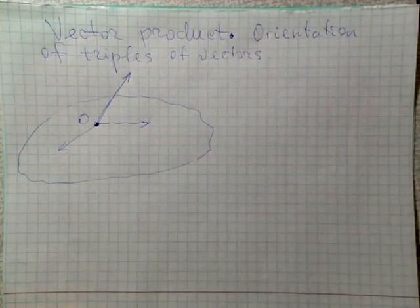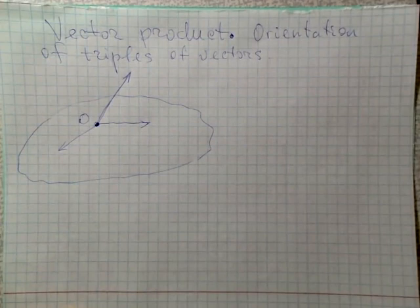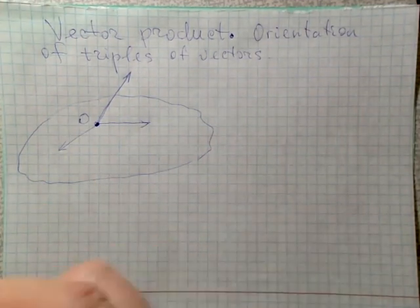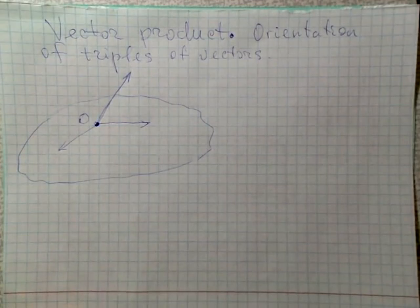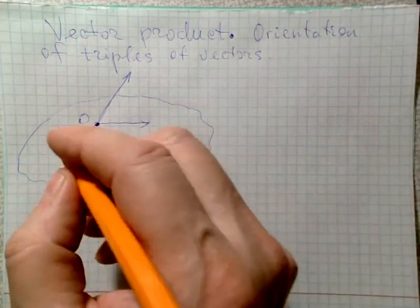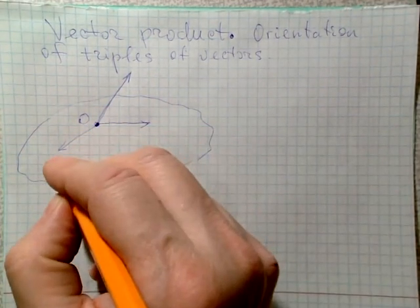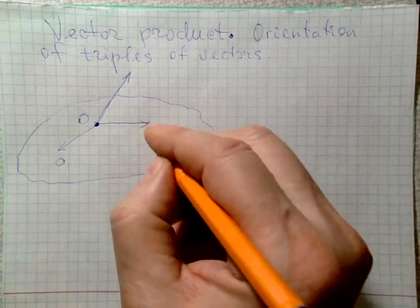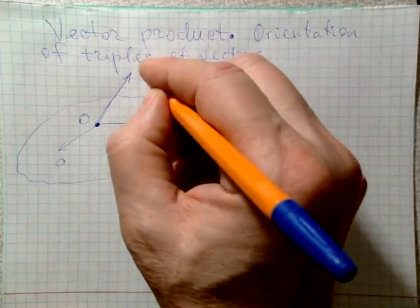Let's assume that these three vectors are ordered, so we can say that one of them is the first vector, the second is the second vector, and the third is the third vector. We shall enumerate them: this is a1, this is a2, and this is a3.